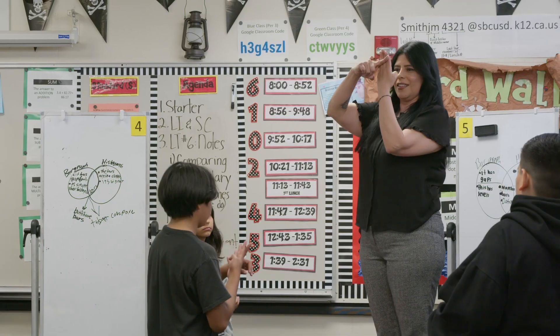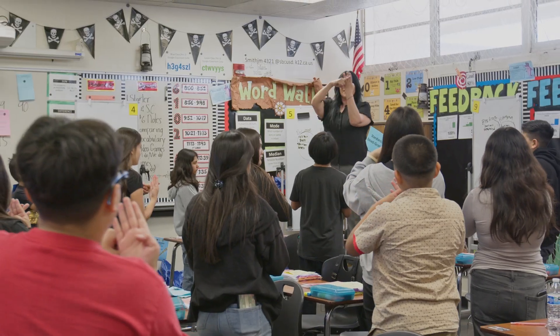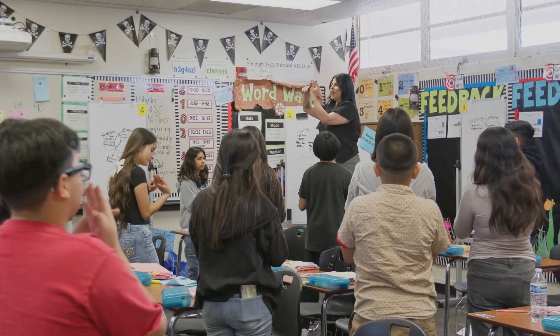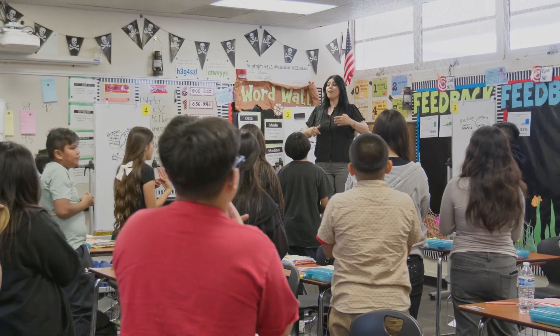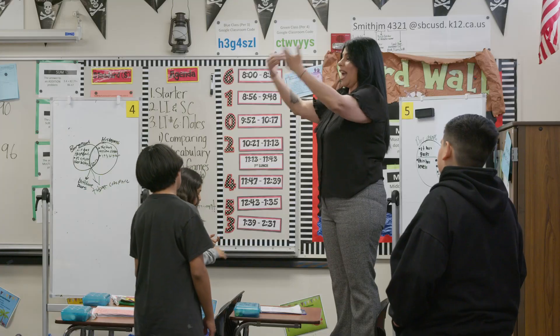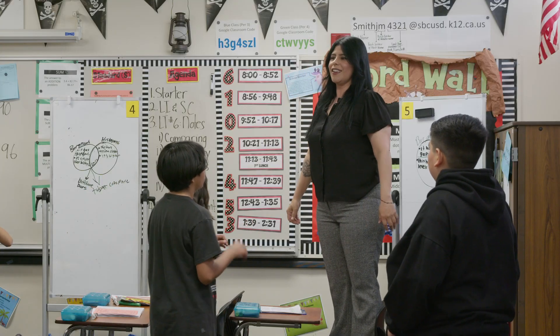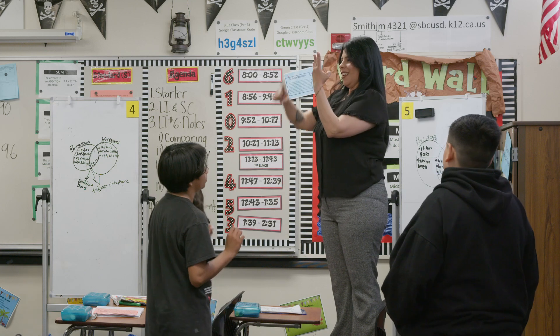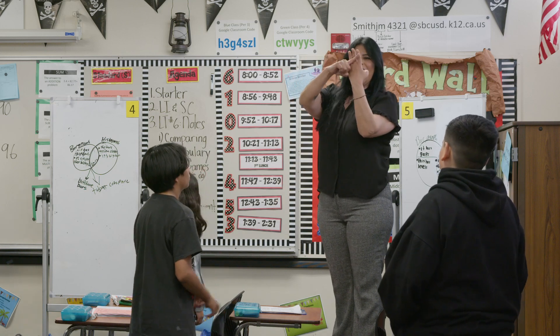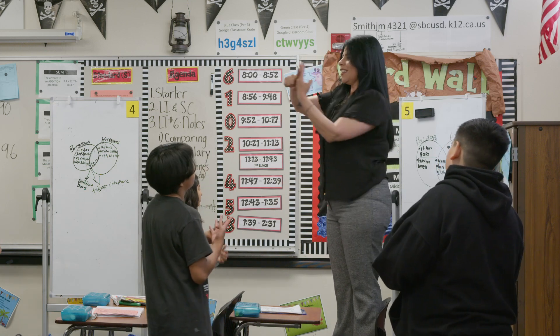Everybody say 'frequency.' What number does this represent? Five. So a frequency is how often something happens. What is frequency? How often something happens. Everybody show me frequency.